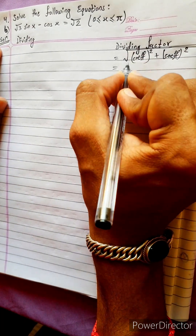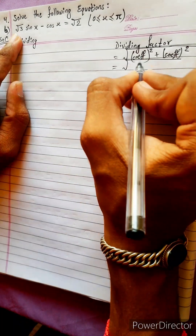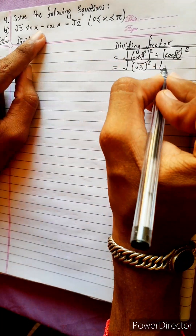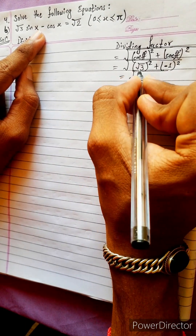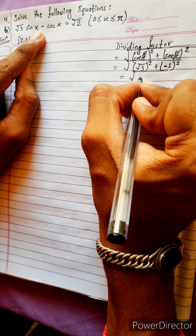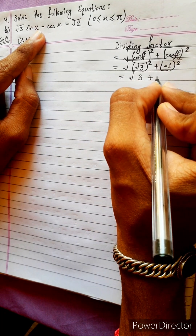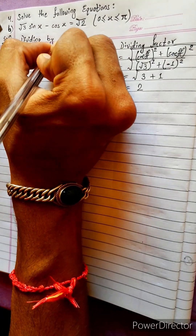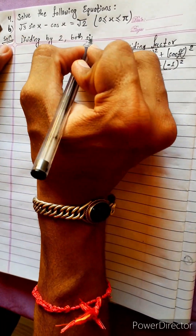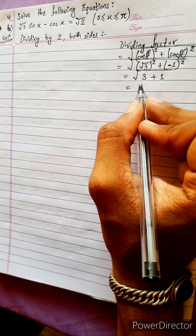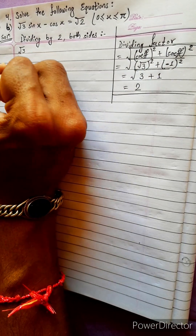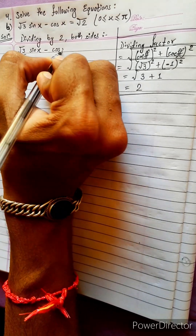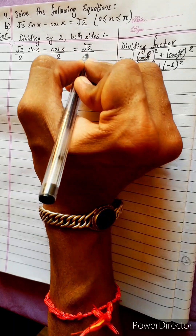Square root 3 equals minus 1. Minus 1 squared equals what we will get — we will get here 3. Minus 1 squared: 1, it will be 4, so 2. Dividing by 2 both sides — we should do both sides. So square root 3 divided by 2, sin x minus cos x divided by 2, equals square root 2 divided by 2.